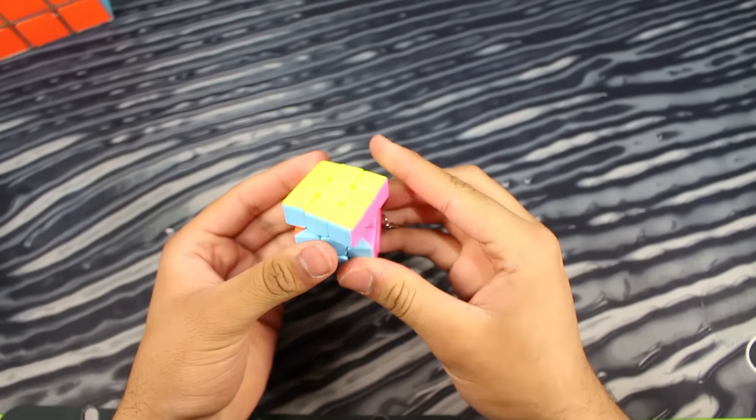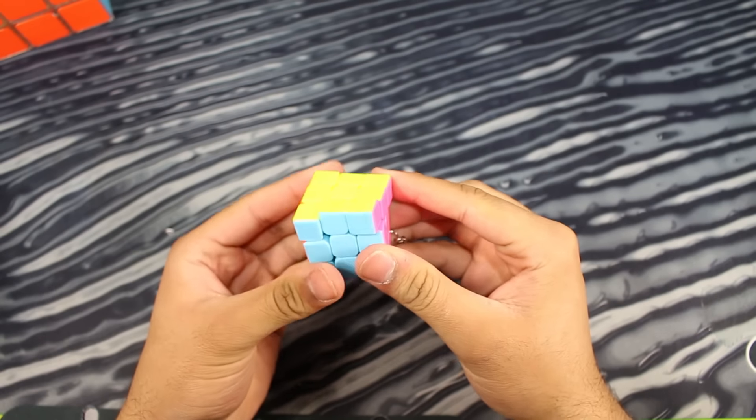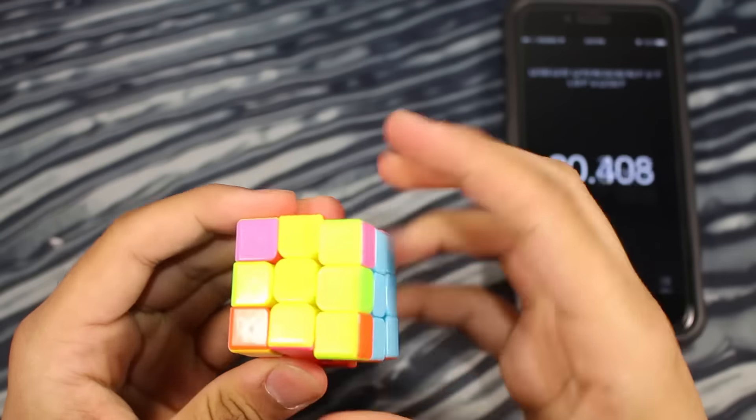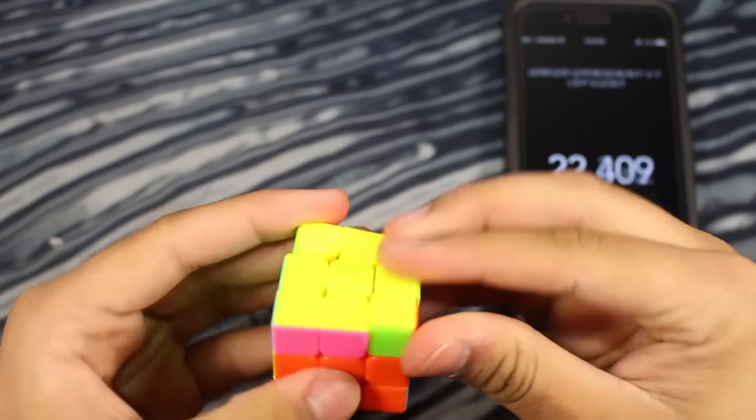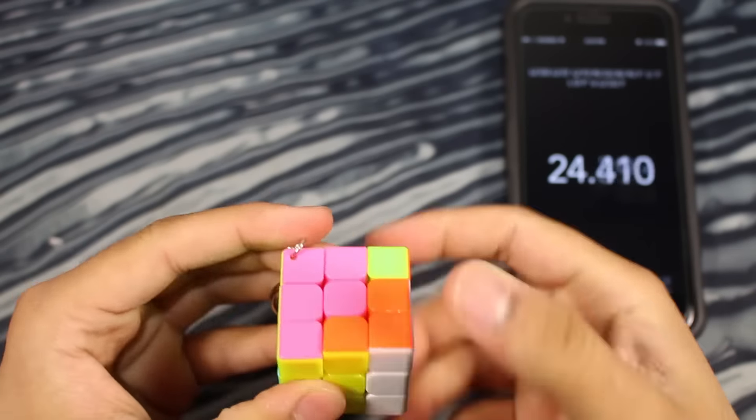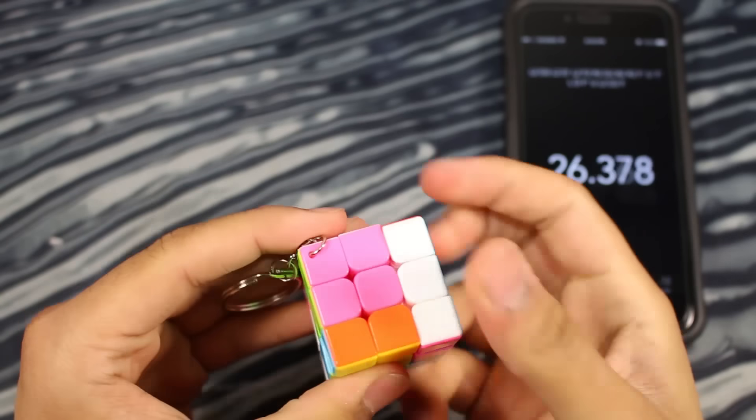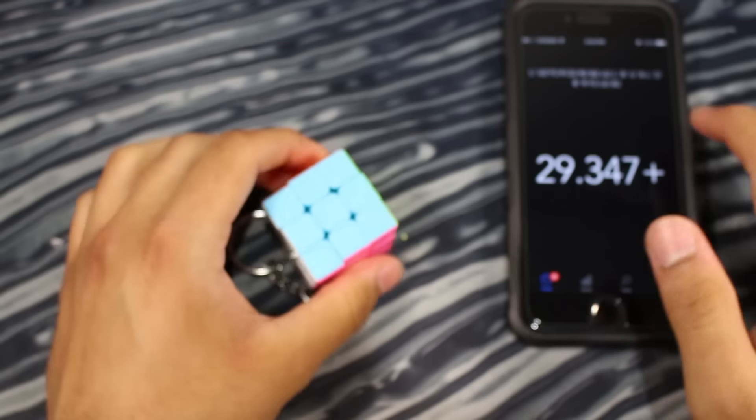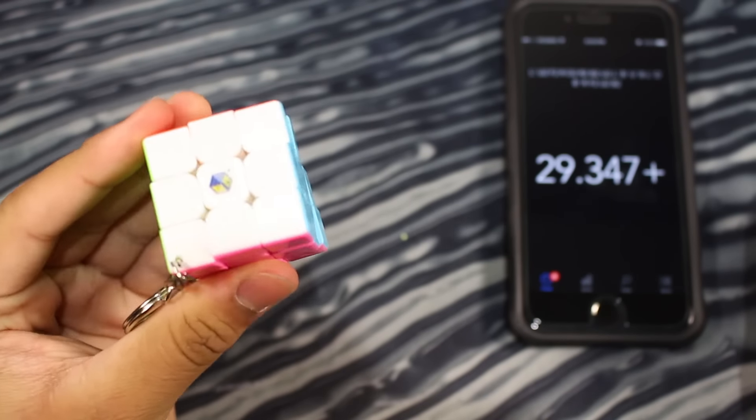This also has some pretty decent turning. And this one could actually reverse corner cut a lot, like half a cubie. So wow, that's like pretty much the same time as the big cube.